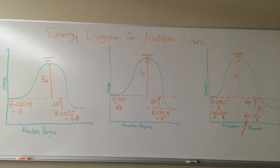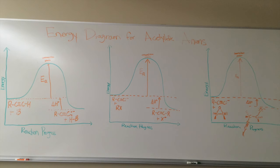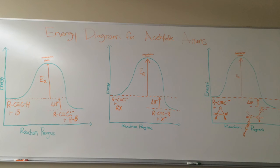The energy diagram for acetylide anions is exothermic for all reactions. The formation of the acetylide anion is exothermic because the base has a larger pKa value than the terminal acetylide, making it a strong base so it can come in and remove the hydrogen.